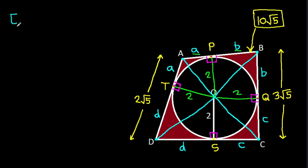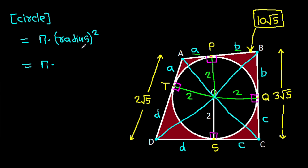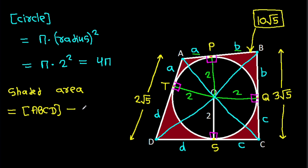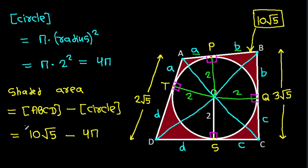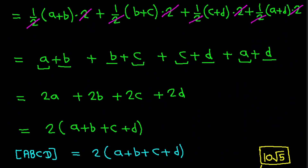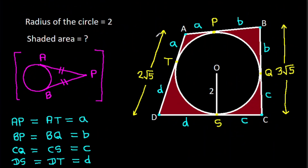Area of the circle equals π × radius² equals π × 2² equals 4π. The shaded area equals area of ABCD minus area of circle equals 10√5 minus 4π.